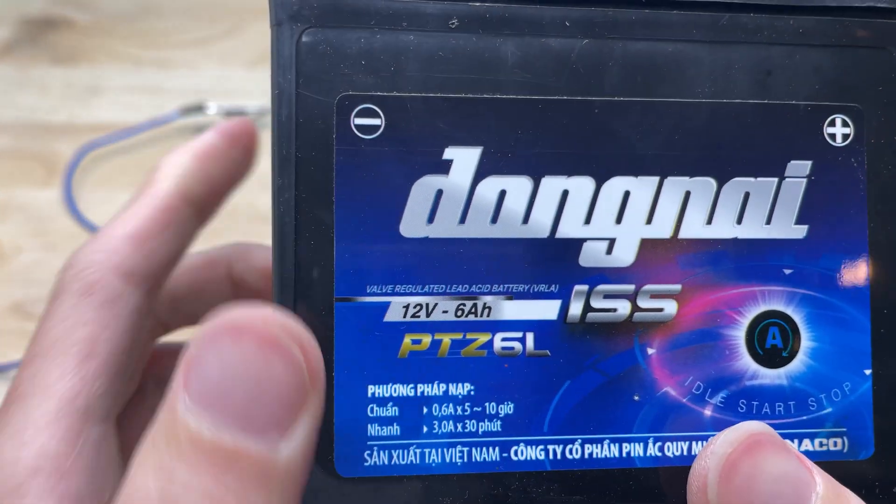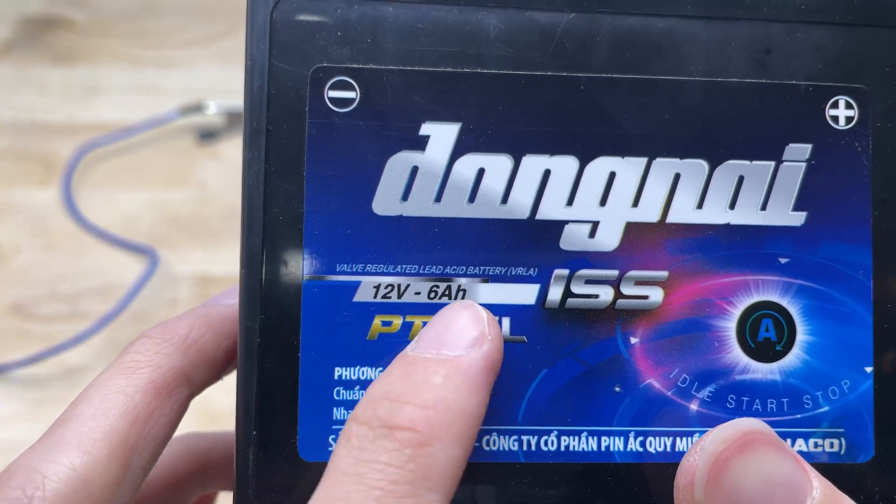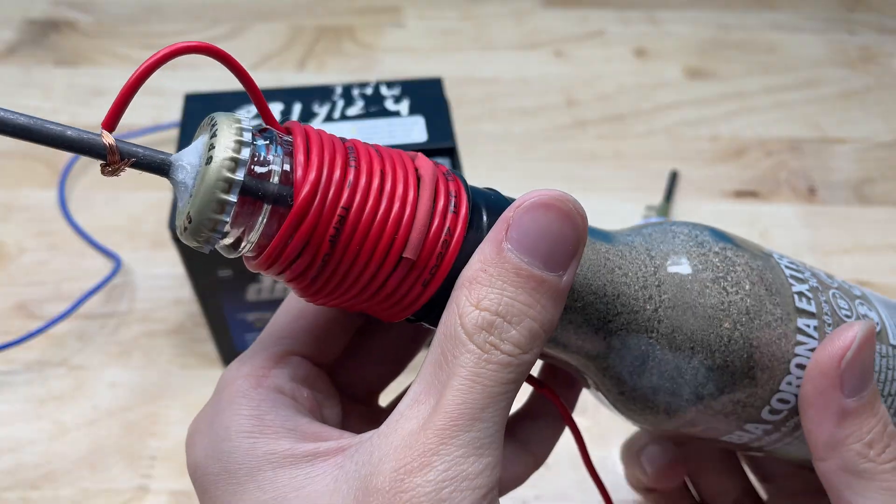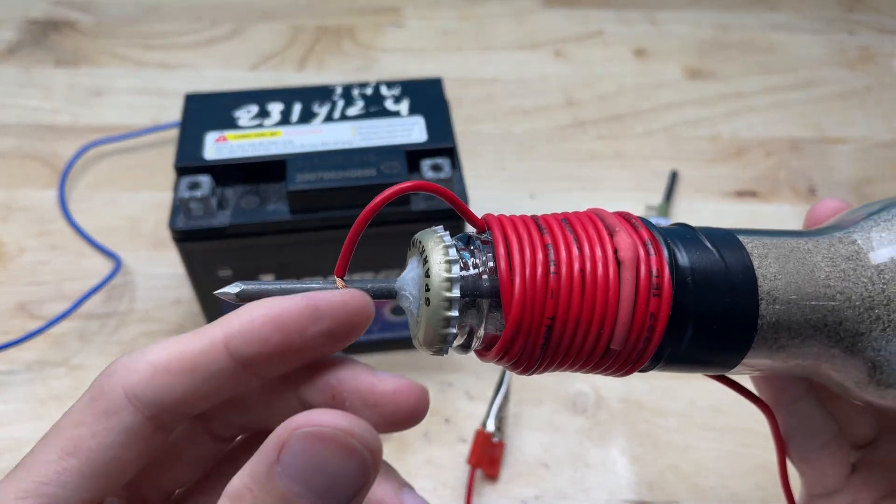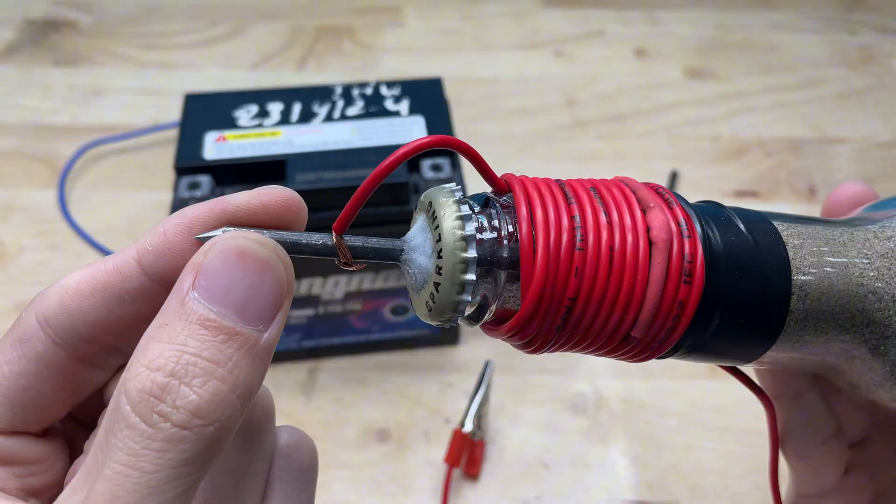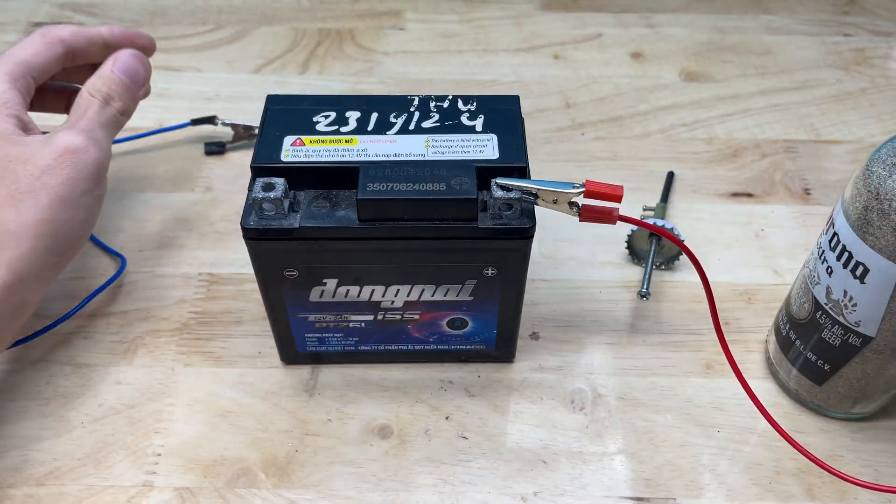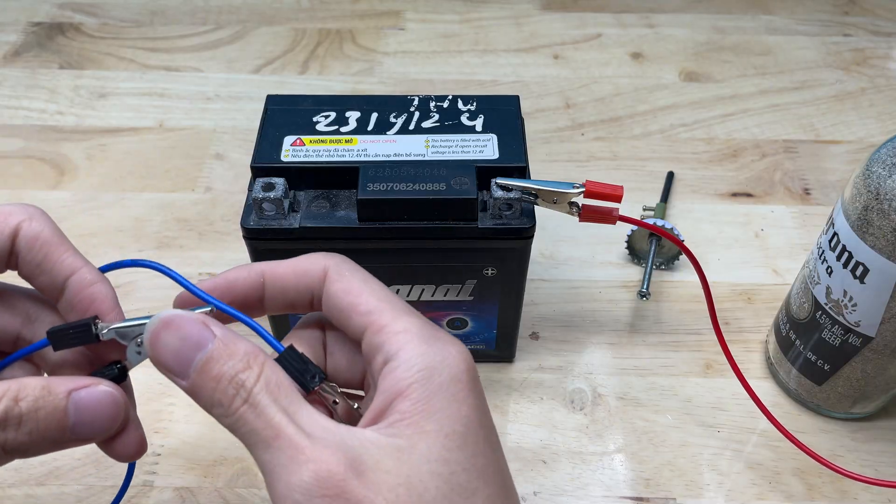For the power source, I'll be using a standard motorcycle battery. It's a 12V lead acid battery, powerful enough to heat up the soldering tip and stable for small electronics work. This type of battery is easy to find, rechargeable, and delivers consistent current, which makes it perfect for our DIY soldering project.